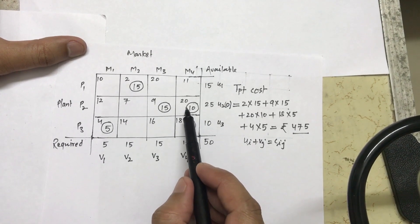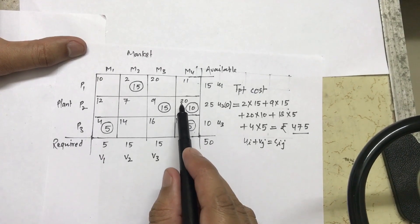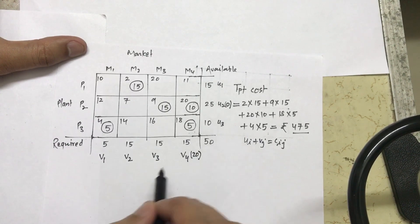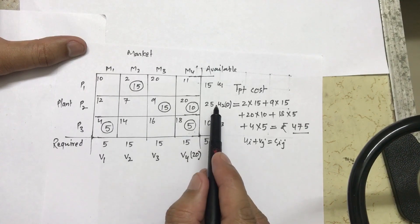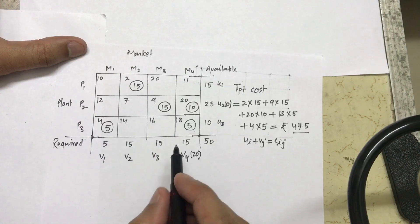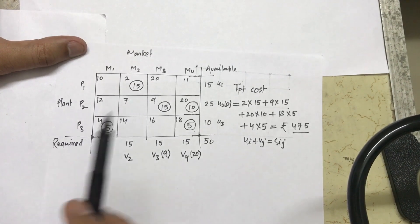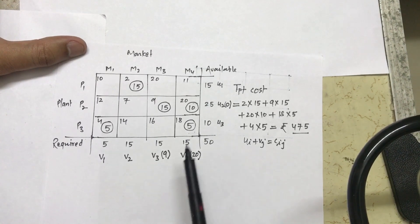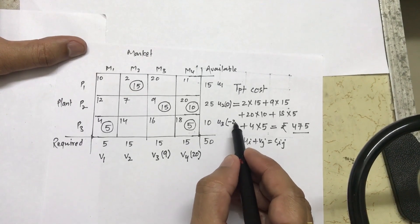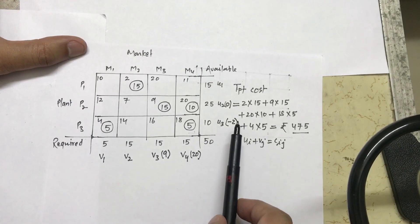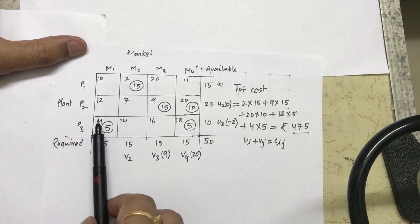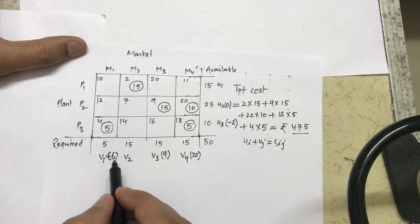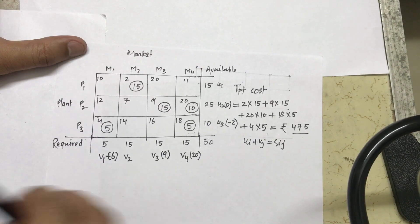Applying the formula to this cell: u2 plus v4 equals 20. Since u2 is 0, v4 comes out to be 20. For the next allocated cell: u2 plus v3 equals 9, so v3 comes out to be 9. Then using another allocated cell: u3 plus v4 equals 18, and since v4 is 20, u3 comes out to be minus 2. Using u3 and v4, I calculate v1 which comes out to be 6.